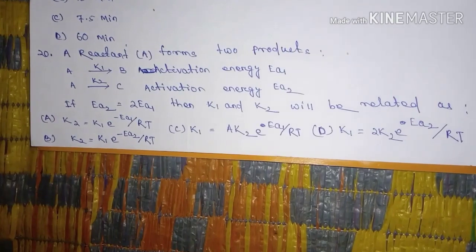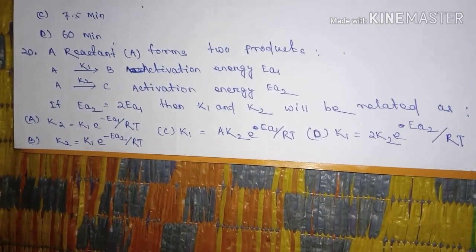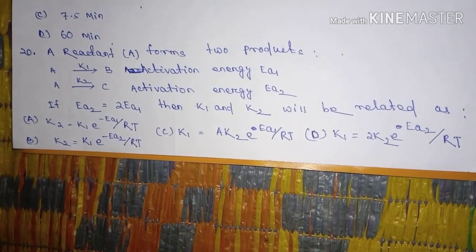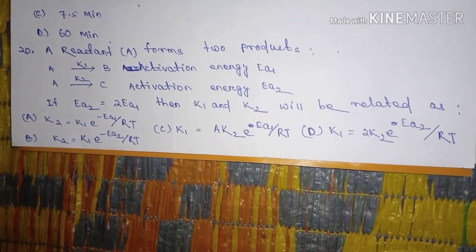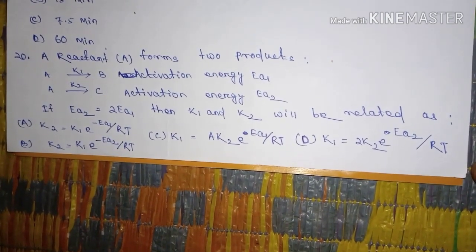Question number 20, a reactant A forms two products. A gives B activation energy E1, A gives C activation energy E2. If E2 equal to E1 then K1.